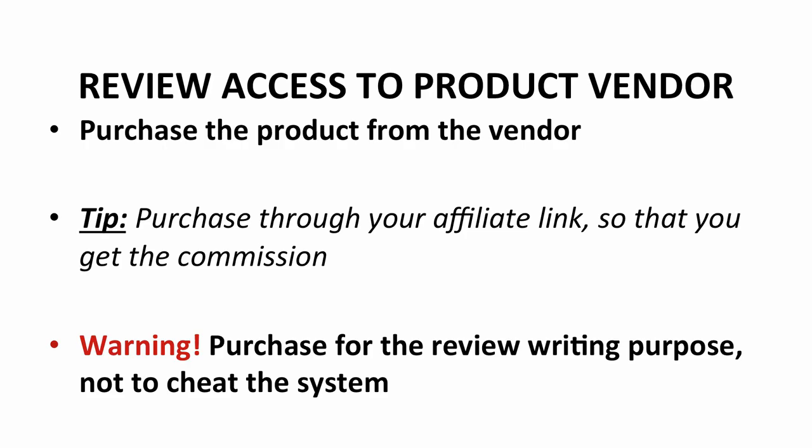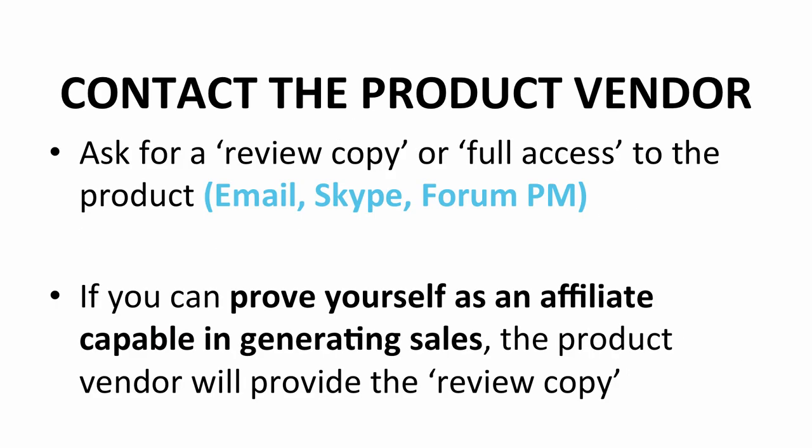Most of the time, you can get review access from the product vendor for free. Contact the product vendor and ask for a review copy or full access to the product. This is an alternative way to get access. You can find the way to contact the product vendor on the product page — click 'Join the Affiliates.' The contact is usually through email, Skype, or forum private message. If you can prove yourself as an affiliate capable of generating sales, oftentimes the product vendor will provide you a review copy.